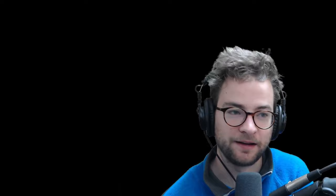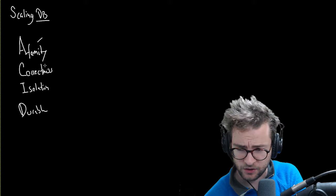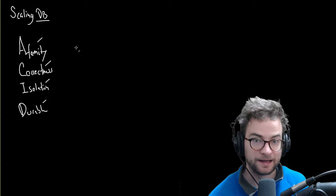First and foremost, I want to talk about ACID — the ACID acronym in database scaling. What this stands for is atomicity, correctness, isolation, and durability. You're going to hear about this a lot, and some people like talking about this in interviews, so it's really important that you know about it. Database systems will also talk about which of these things they prioritize.